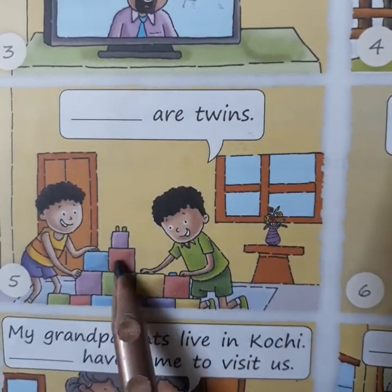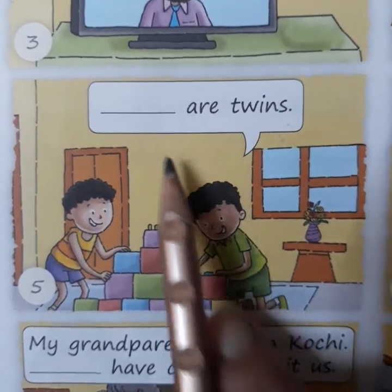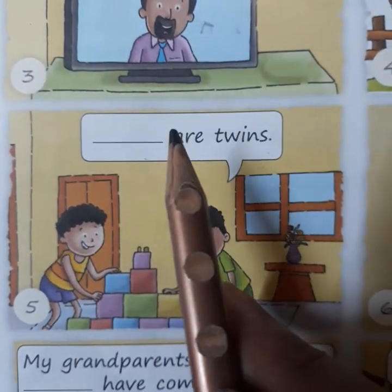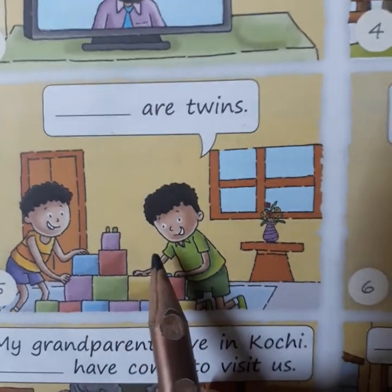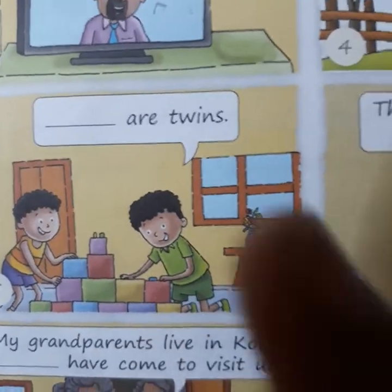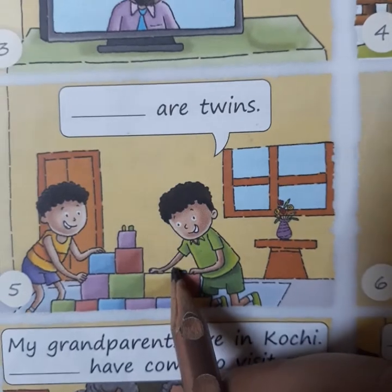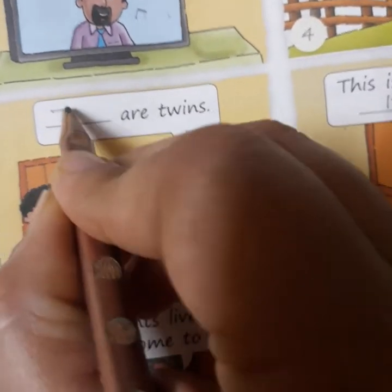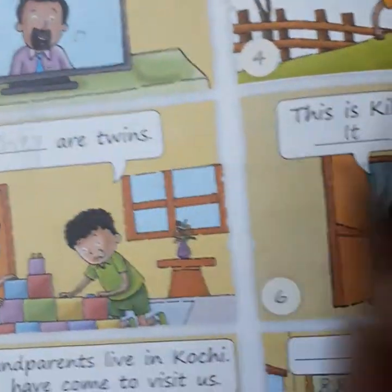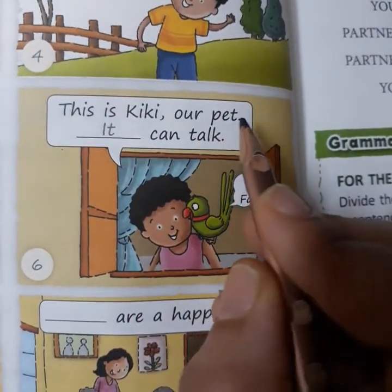Next one: 'Dash are twins.' There are more than one boys here, so 'he' would be wrong — he is used for singular. For more than one person we write 'they'. They are twins.